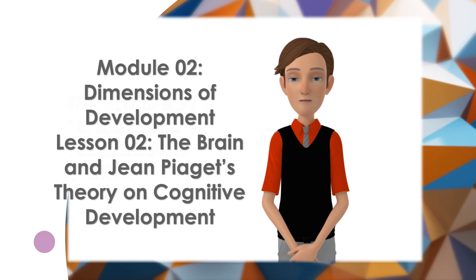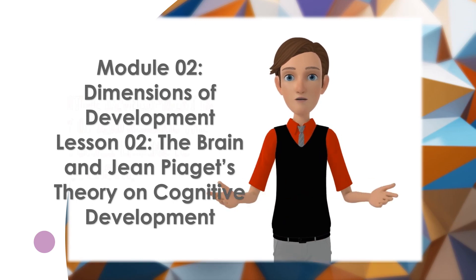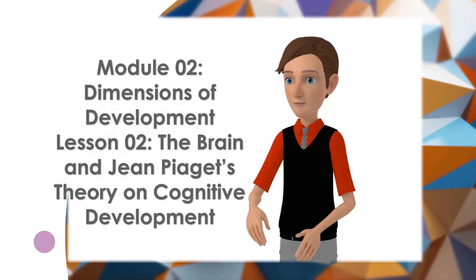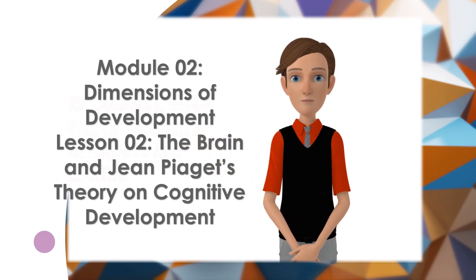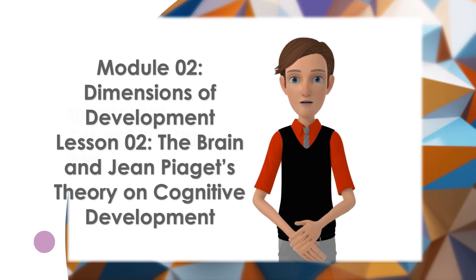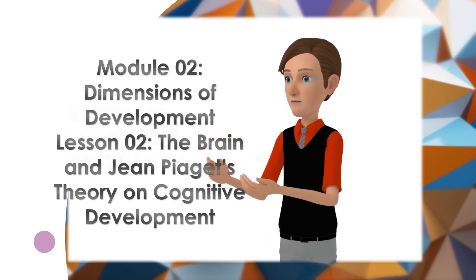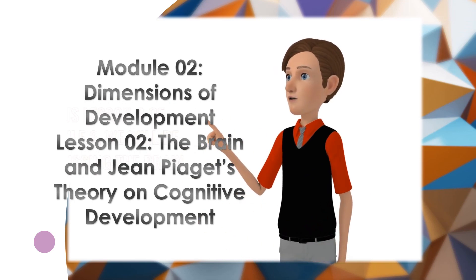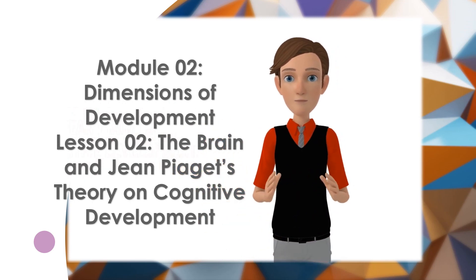Cognitive development is a way of addressing how a child learns to think, reason, and use language, which are vital to the child's overall growth and development. The vital organ to cognitive development is the brain. In this lesson 2 of module 2, we will be discussing the brain and Jean Piaget's cognitive development.